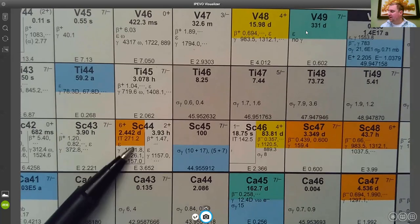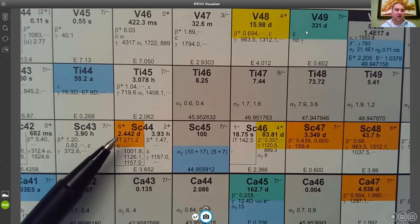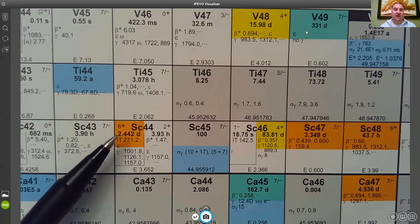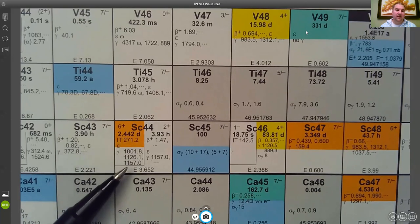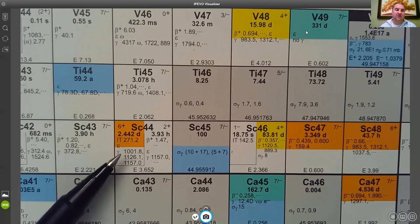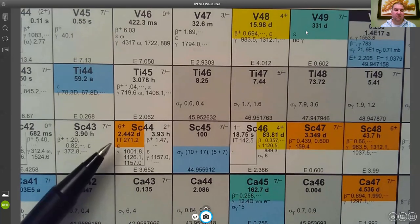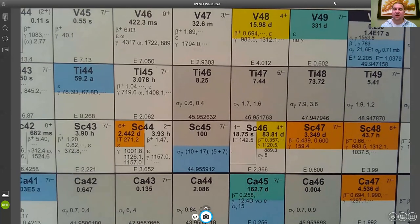The main example we're going to be looking at is for scandium-44 and the metastable isotope or metastable isomer of that nuclide. I want you to take note of some of the information that you see here for this metastable isomer, and we're going to see some of this information pop up when we look at the level diagram.